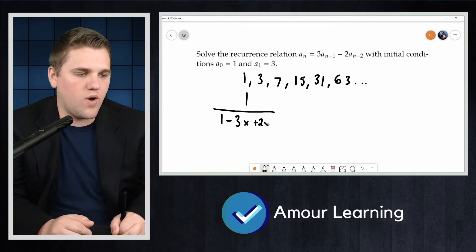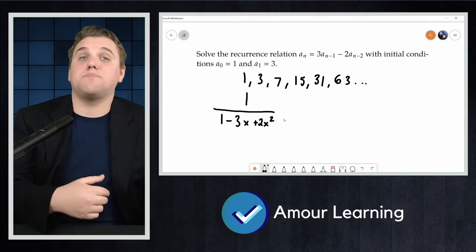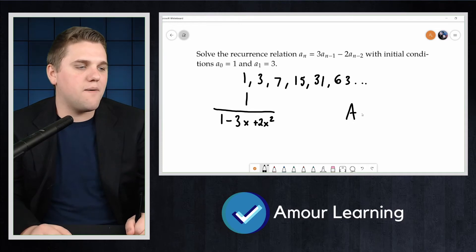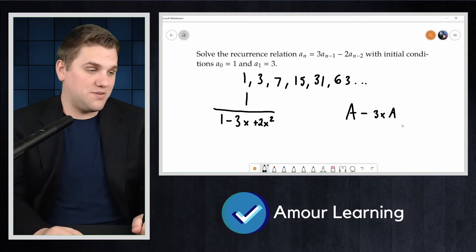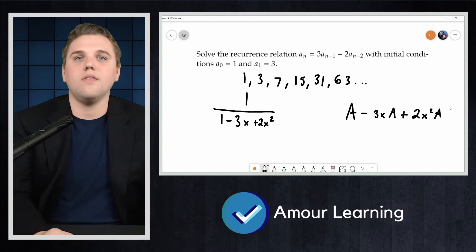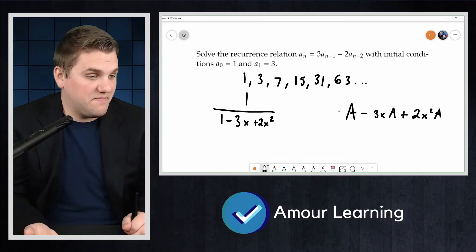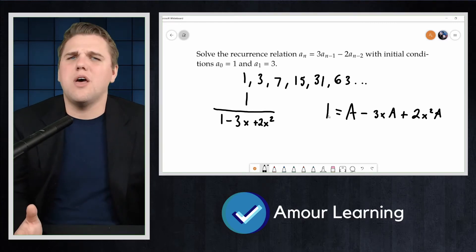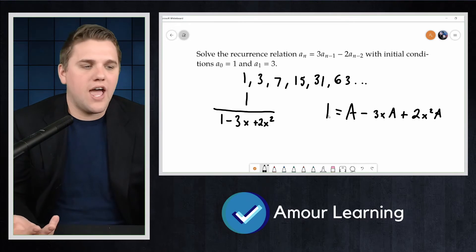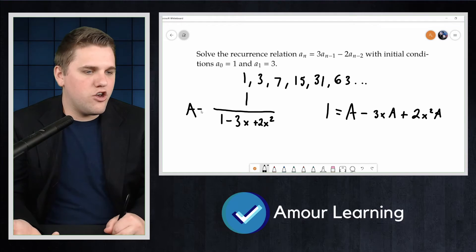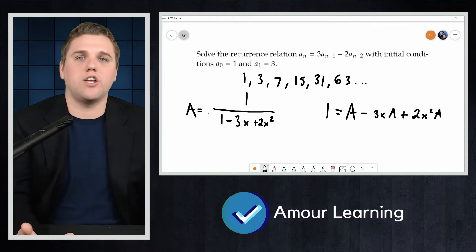That sequence has a generating function — we found it to be 1 over (1 − 3x + 2x²). We did this by calling the generating function A, then computing A − 3x·A + 2x²·A, which equaled just 1, since every other term canceled out. But how does knowing the generating function help us solve the recurrence relation?